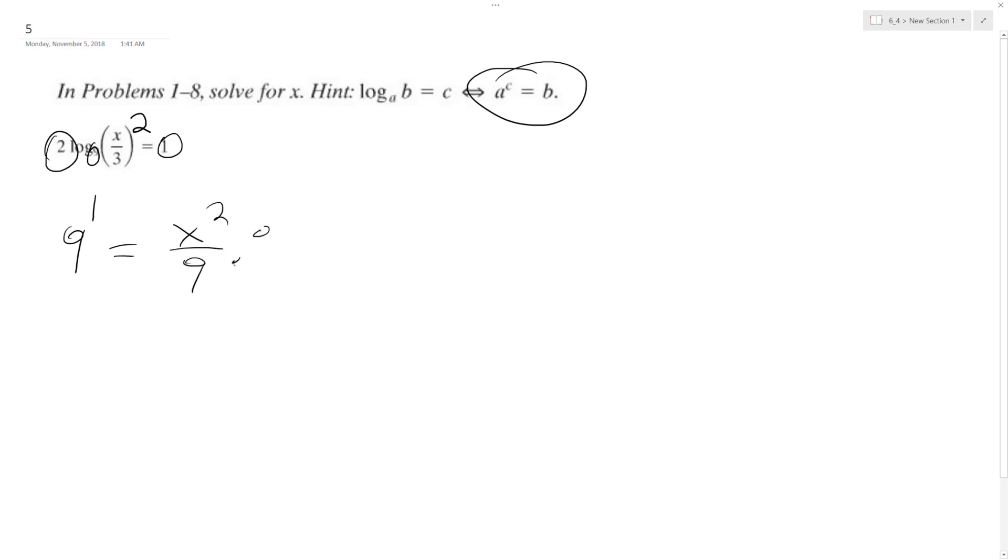So what we do is we multiply by 9 on both sides. And we end up with x squared is equal to 81. Take the square root.